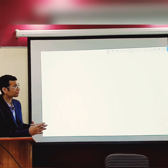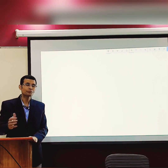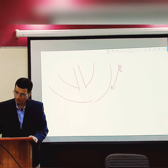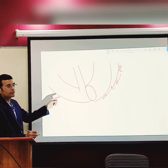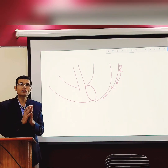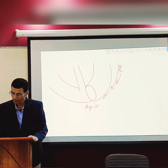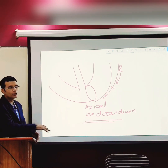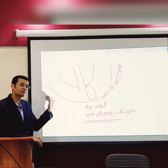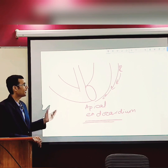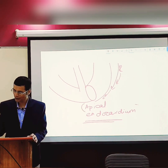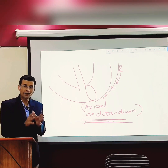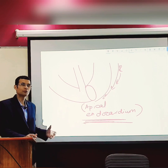Therefore, depolarization goes from apex to base and endocardium to epicardium, and then repolarization and recovery occurs in the reverse — from base to apex and epicardium to endocardium. Repolarization occurs last in the apex. So the last part of the heart to repolarize is the apical endocardium. Look at depolarization and repolarization as two different entities — only then will you be able to understand these happenings in the heart.